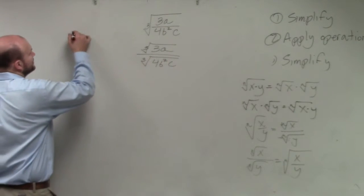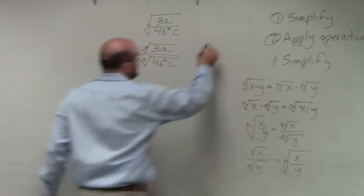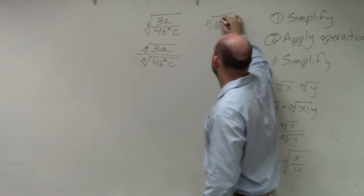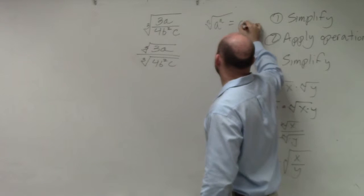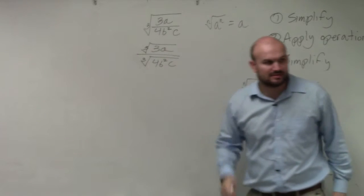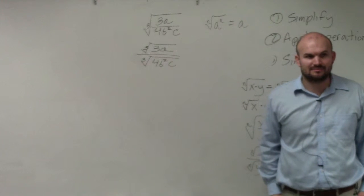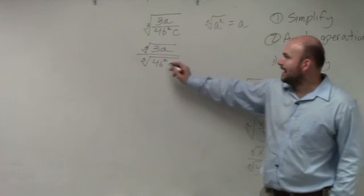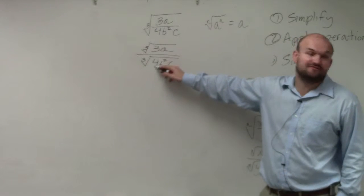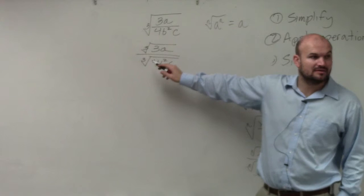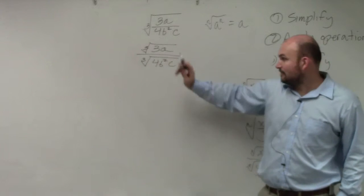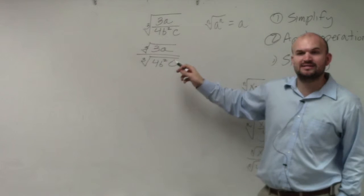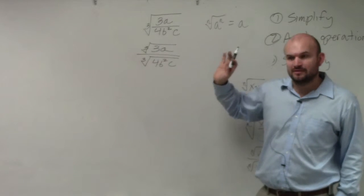So what I need to do is use my identity property. So therefore, there's no more root. I need to get this so that 4 would be raised to the third power. B has to be raised to the third power. And C needs to be raised to the third power.